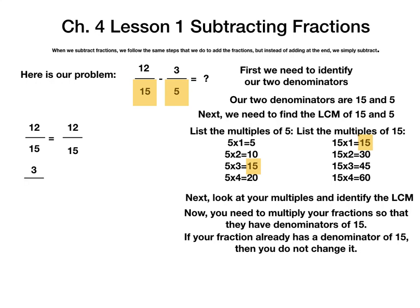But 3 fifths, we do have to change. The denominator is going to have to be equal to 15. If we look, 5 times some number is going to equal 15. From our list of multiples, we can see 5 times 3 is 15. Whatever you do to the bottom, you must do to the top. 3 times 3 is 9. So, 3 fifths is equivalent to 9 fifteenths. We are not trying to change the value of the fraction — we just need our denominators to be 15. Now we are going to rewrite our problem: 12 fifteenths minus 9 fifteenths.